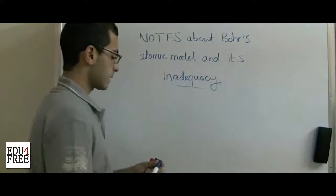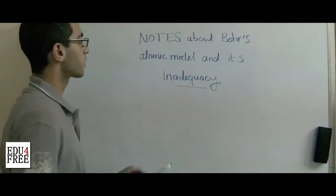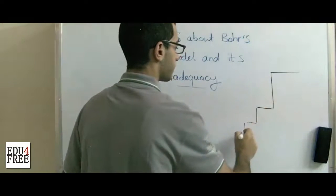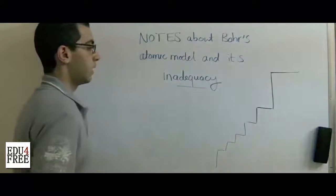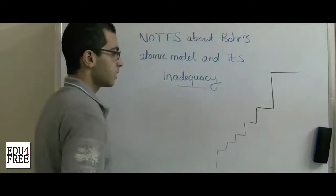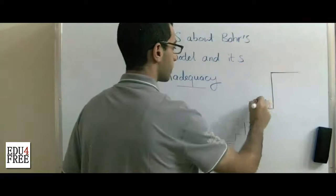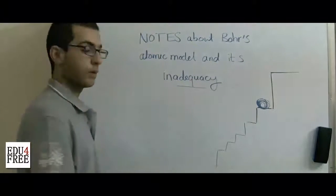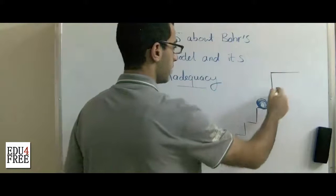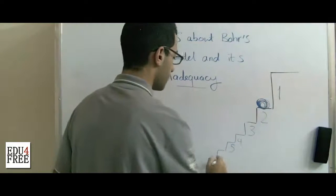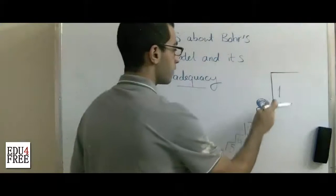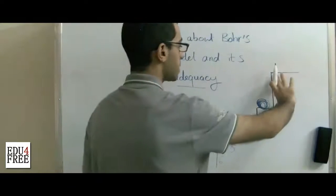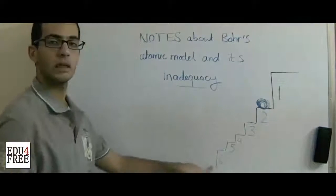Another thing is that the energy levels in Bohr's atomic model can be represented by a staircase. And say the electron was found here. In order for the electron to jump from one step, let's say this one: two, three, four, five, six. For the electron to jump from two to three, it needs one quantum. And we can notice that the distance of each step decreases as we go farther from the nucleus.